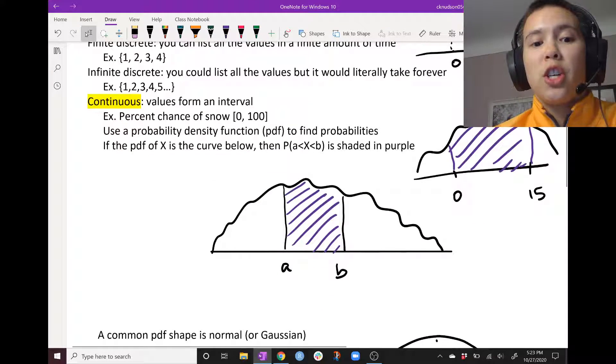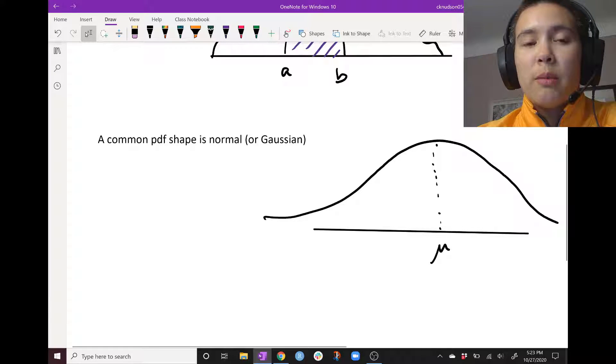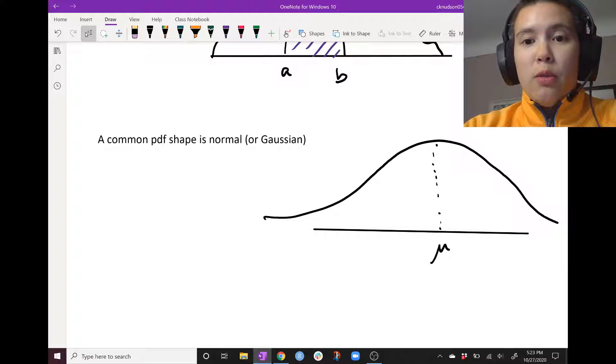Okay, now let's move into a very special shape of PDF. And that is a normal distribution or sometimes called a Gaussian distribution. And it looks a little bit something like this. We can see that it's bell shaped. You also hear this called a bell curve.